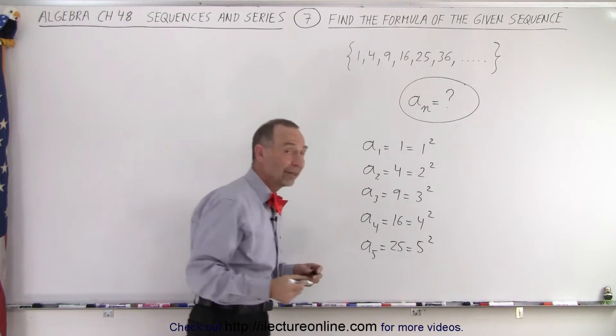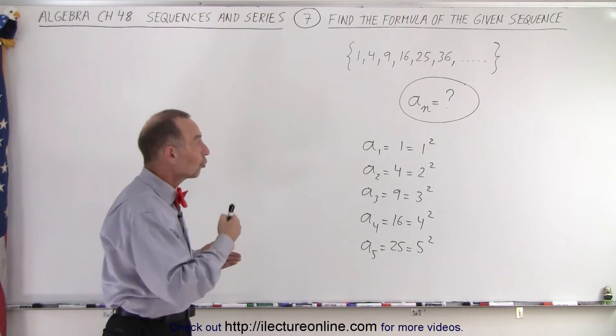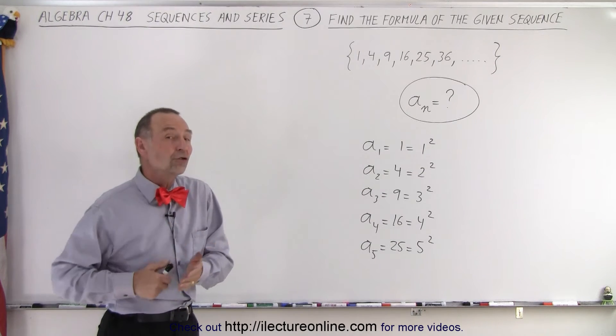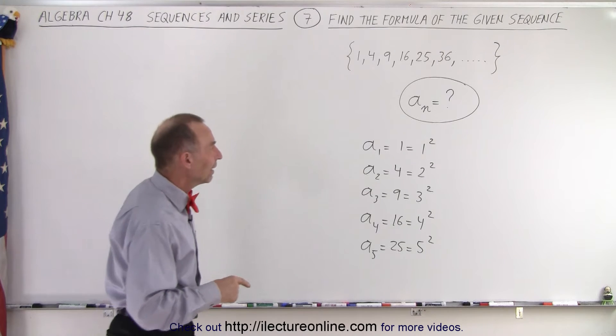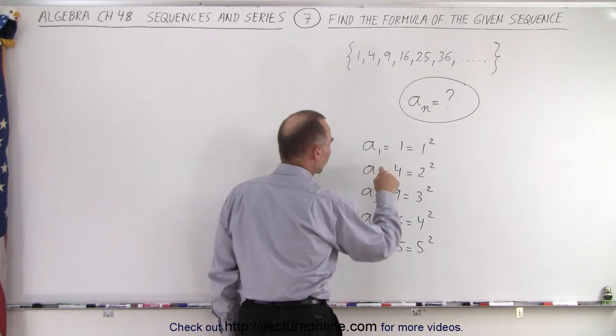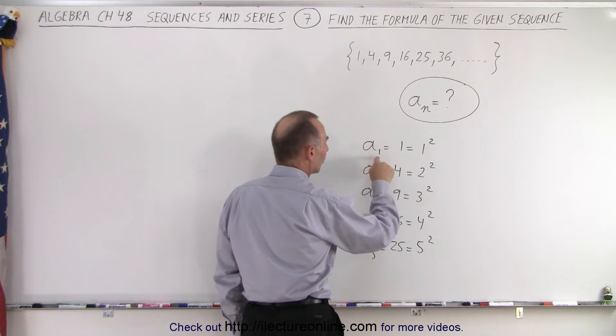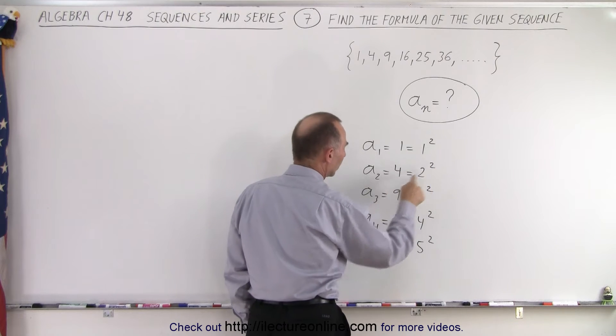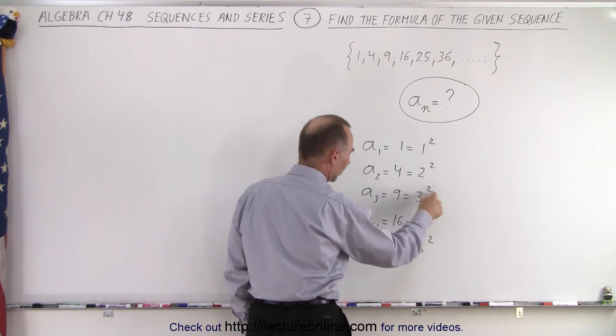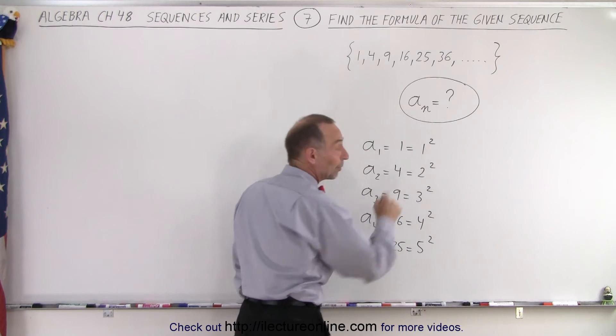So you can recognize that each of those terms is simply the integer squared in sequential order from 1 to 2 to 3 to 4 and so forth. So if you now replace the subscript by n, then you can see that a sub 1 is 1 squared, a sub 2 is 2 squared, a sub 3 is 3 squared, a sub 4 is 4 squared, that this number and this number is the same.